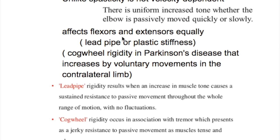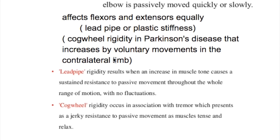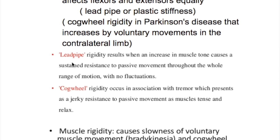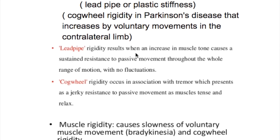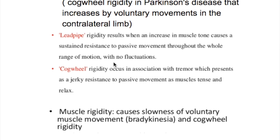Rigidity affects flexors and extensors equally, giving a lead pipe or plastic stiffness, and cogwheel rigidity in Parkinson's disease. Lead pipe rigidity is present throughout the movement with sustained passive resistance and no fluctuations, whereas cogwheel rigidity, which occurs in Parkinson's disease, involves jerky resistance to passive movements along with tremors.